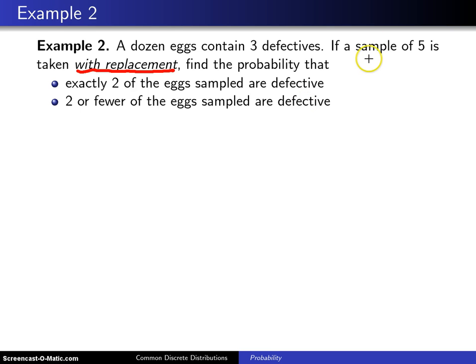In this particular case, n, our number of Bernoulli trials, is 5. Each time we check an egg, it is either defective or it is not defective.